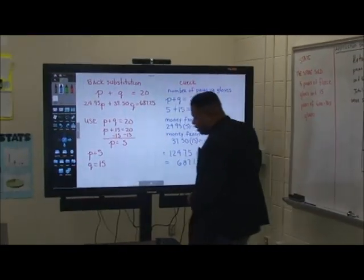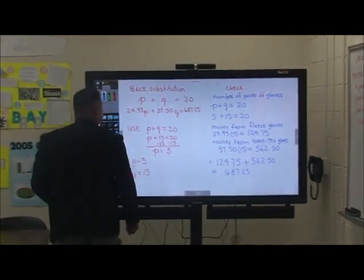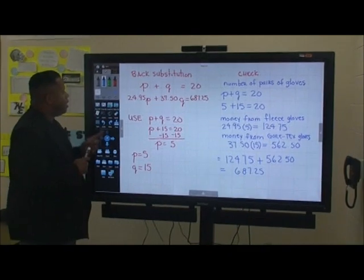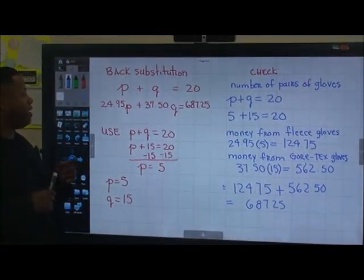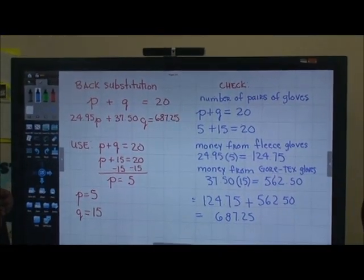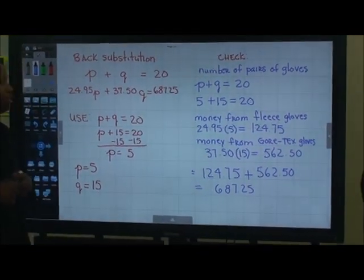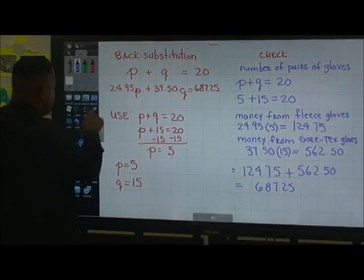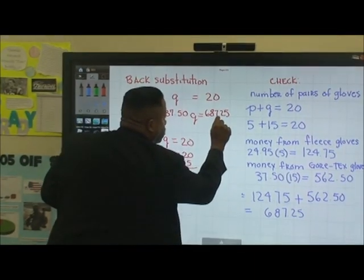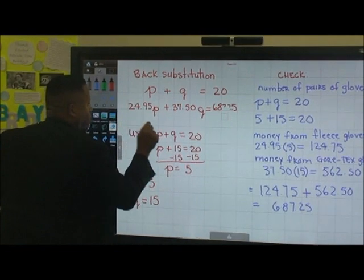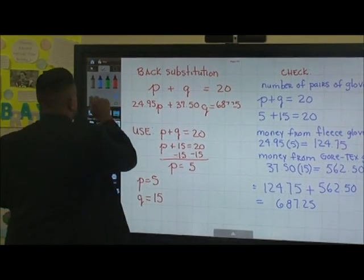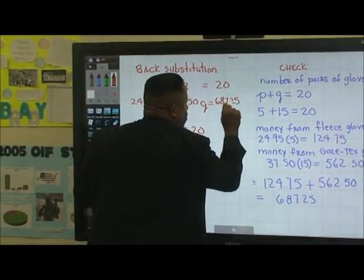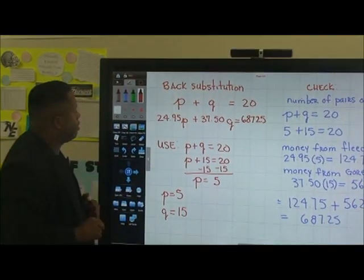So as we go over here to the monopad, we have back substitution where we have P plus G and then of course 24.95P plus 37.50G is equal to 68,725. Make sure that this is no decimal place here and that this is neat.